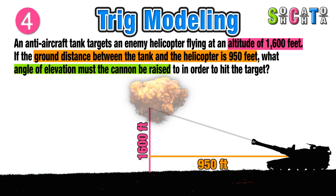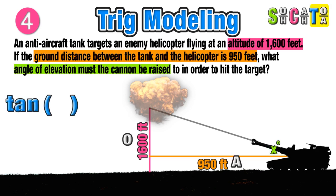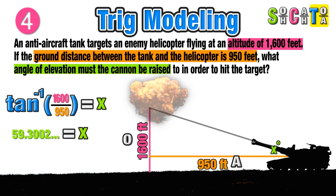The angle of elevation for the cannon is our unknown — we call it x degrees. When our unknown is an angle, we use inverse trig rather than regular trig. In this case we use inverse tangent: the inverse tangent of 1600 over 950 gives us an angle of elevation of approximately 59.3 degrees.